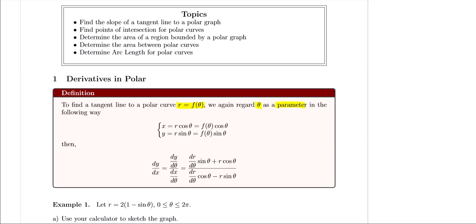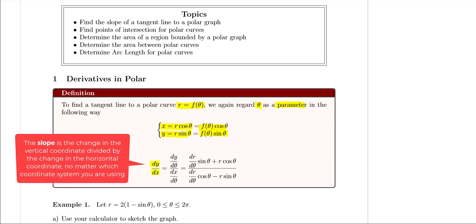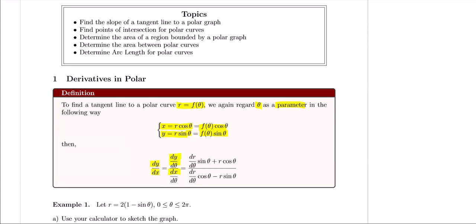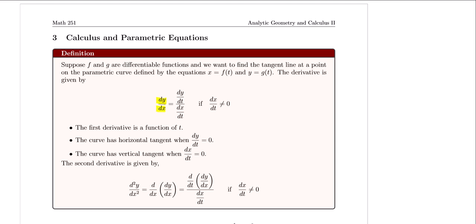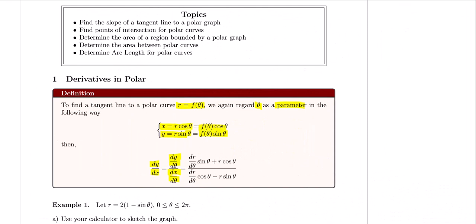Since x equals r cosine theta and y equals r sine theta, we can treat x as some function of theta times cosine theta, and y as some function of theta times sine theta. If this holds, then the derivative dy/dx equals dy/dθ over dx/dθ. Recall from section 12.1 that we defined dy/dx as dy/dt over dx/dt where y and x are functions of the parameter t — this can be proved with the chain rule. Since y and x are functions of theta, we need the product rule to obtain the formula.